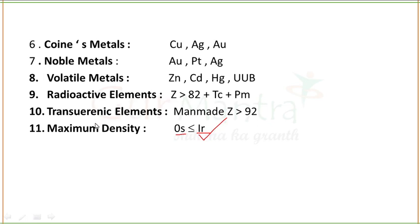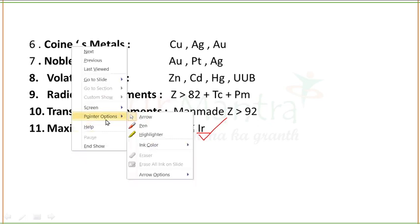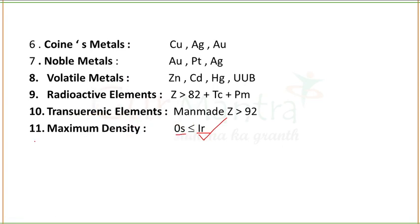This is a very important point because this question has been asked many times: which element has the maximum density in the periodic table? The answer is Ir, iridium, which has a maximum density of 22.65 g/cm³. Osmium has a density of 22.57 g/cm³ — the difference is quite small, but you have to learn that iridium has the maximum density of 22.65 g/cm³.